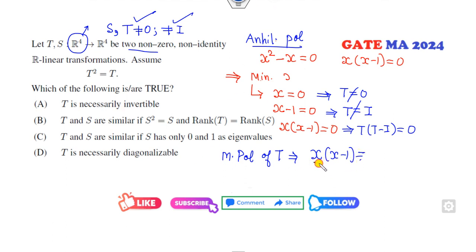These are the two factors. Both factors are linear. So what does it mean? T is diagonalizable. Because we know whenever the minimal polynomial is obtained in the form of linear factors, then this is always diagonalizable. So this option is the correct option.